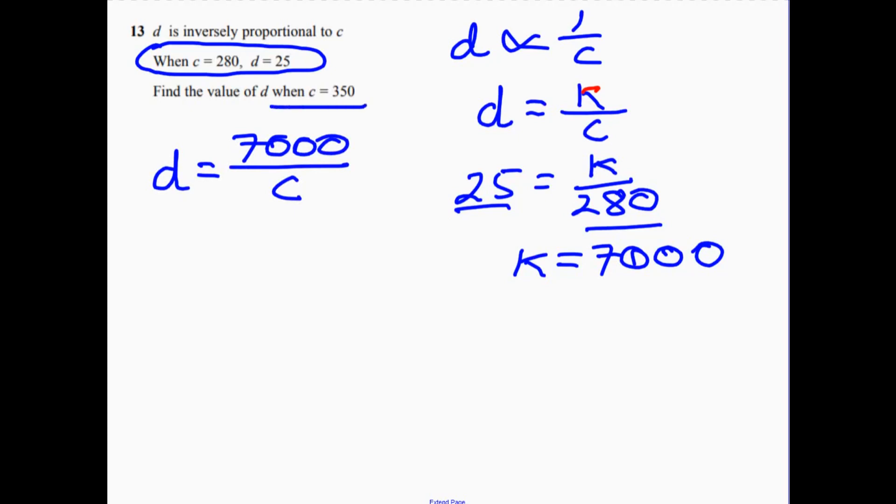Now find the value of D. So D equals 7,000 over 350. So D must equal 20.